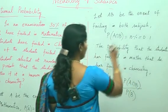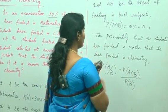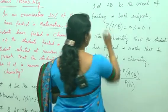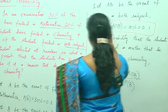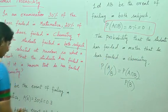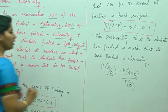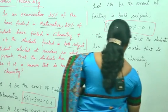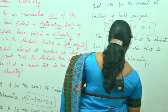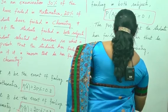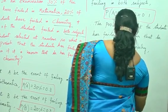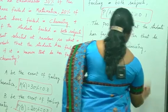What is P of A intersection B? We have got it as 0.1. And what is P of B here? 0.2, and P of A is 0.3. Therefore, the answer is 0.1 divided by 0.2, which will give you 0.5.